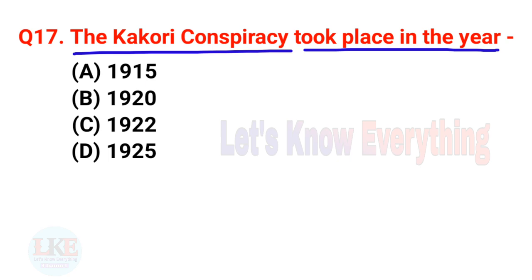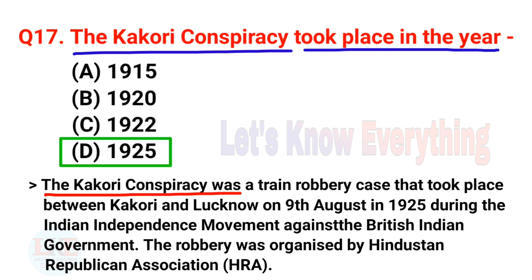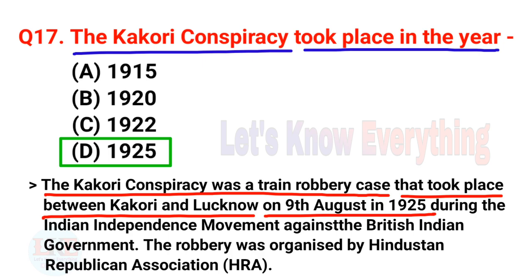Question number 17: The Kakori Conspiracy took place on 9th August 1925. It was a train robbery case that took place between Kakori and Lucknow on 9th August 1925 during the Indian independence movement against the British Indian government. The robbery was organized by the Hindustan Republican Association, HRA.